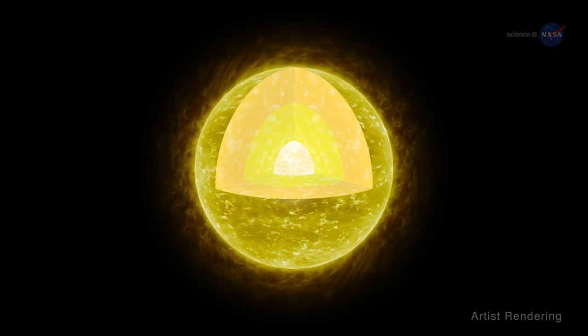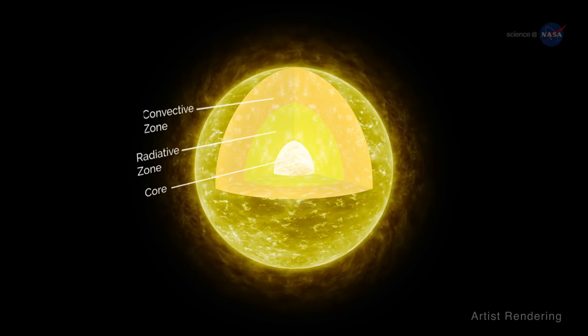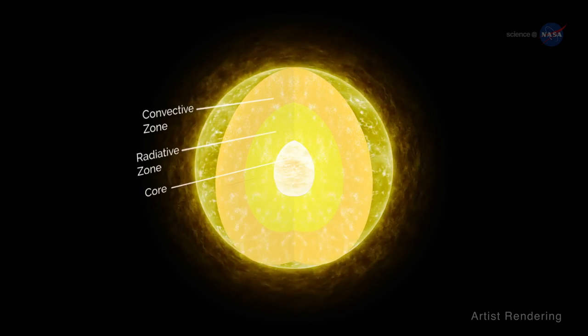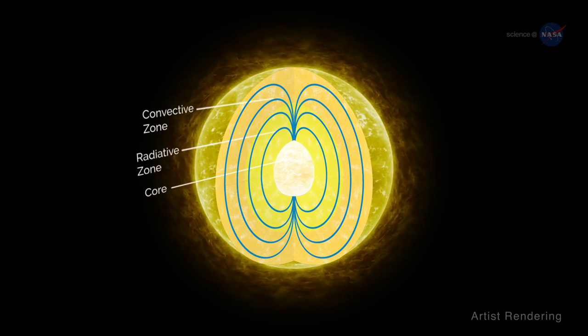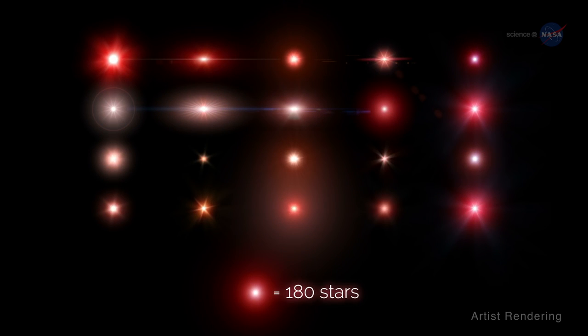Astro-seismologists analyze brightness fluctuations to study the interior structure of stars, including the strength and distribution of magnetic fields deep below the stellar surface. This is exactly what Stello and colleagues did using Kepler observations of 3,600 red giant stars.